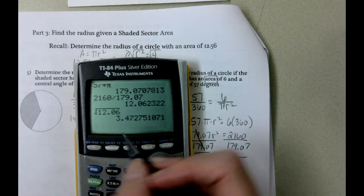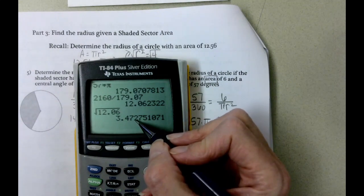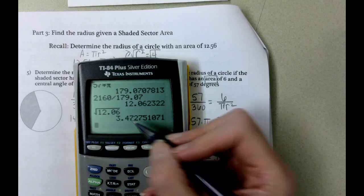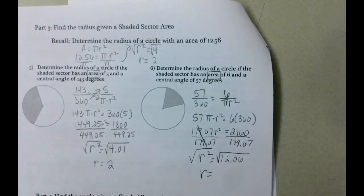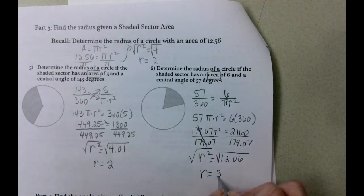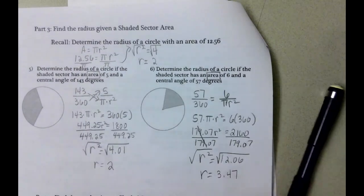And we end up with 3.472. Looking at the 2, it's less than 5, so we're going to leave that 7. Our radius is 3.47. And we can take 3.47 and then... Oh, I'm good. Here we go, Erica.